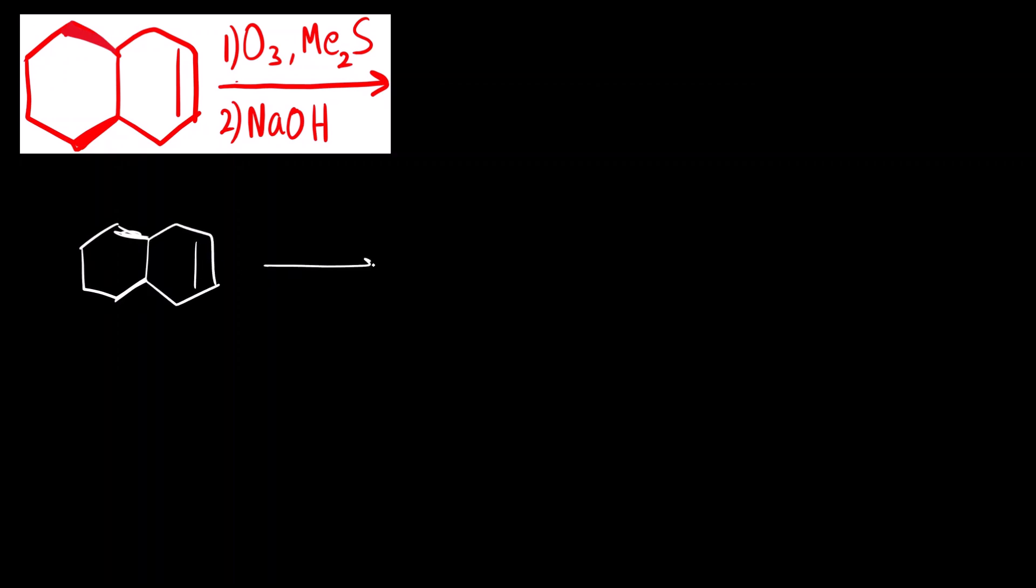An alkene is given, what we are doing is, the first step is reaction with ozone, that is ozonolysis, and the solvent given is dimethyl sulfide. This is what this is a reductive ozonolysis.